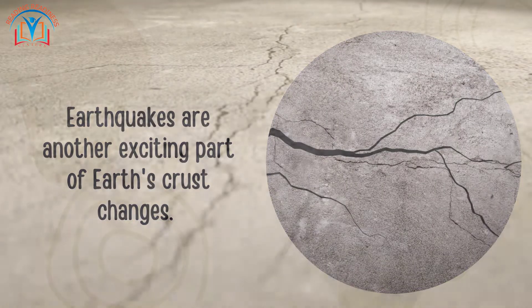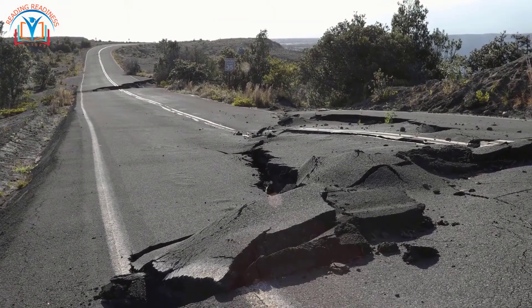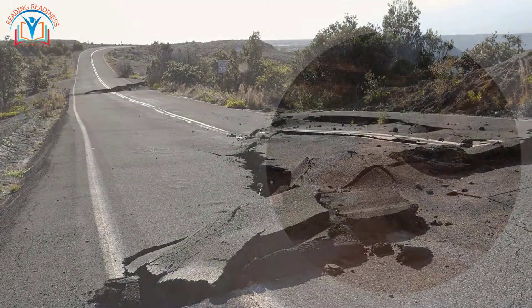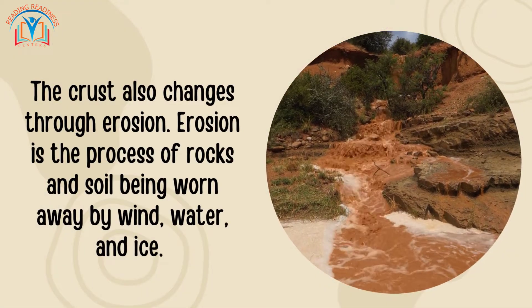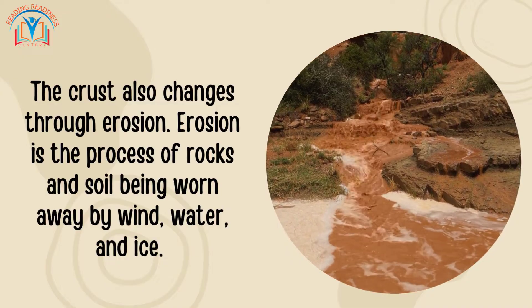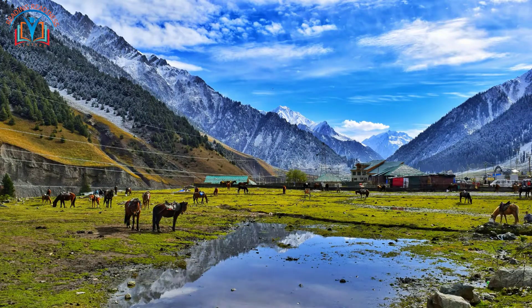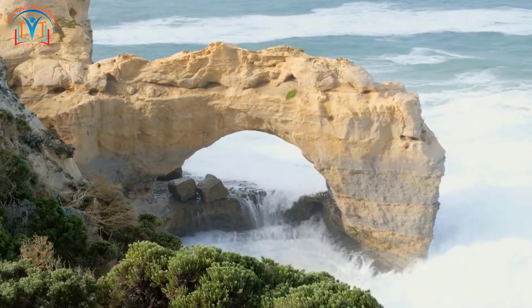Earthquakes are another exciting part of Earth's crust changes. When tectonic plates suddenly slide past each other, they can release a lot of energy, causing the ground to shake. The crust also changes through erosion — the process of rocks and soil being worn away by wind, water, and ice. Over time, erosion can carve out valleys, canyons, and rivers.